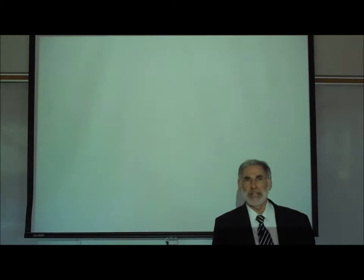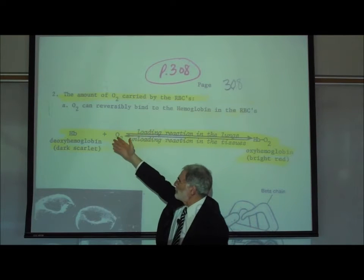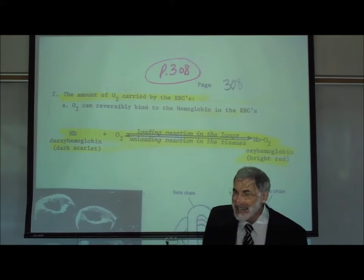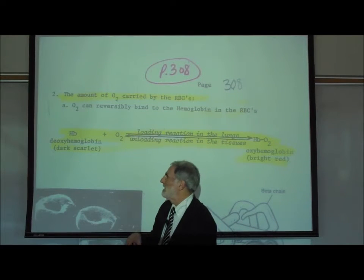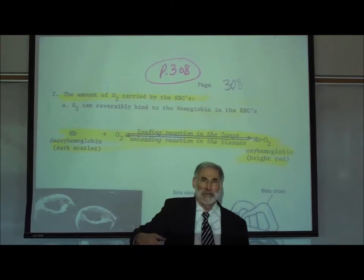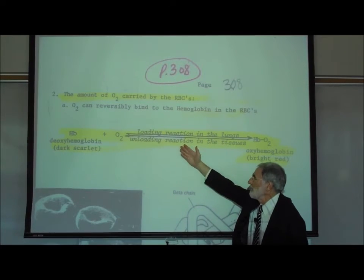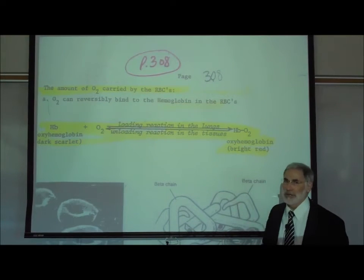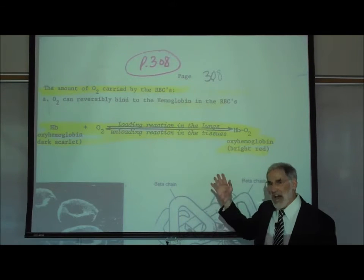Returning to page 308, we are reminded that oxygen can reversibly combine with hemoglobin. When oxygen is not attached to the hemoglobin, the hemoglobin is a dark red, almost a reddish black — referred to as deoxyhemoglobin, which literally means without oxygen. When the oxygen attaches to hemoglobin, it forms oxyhemoglobin, which is a very bright scarlet red. This is a reversible reaction.